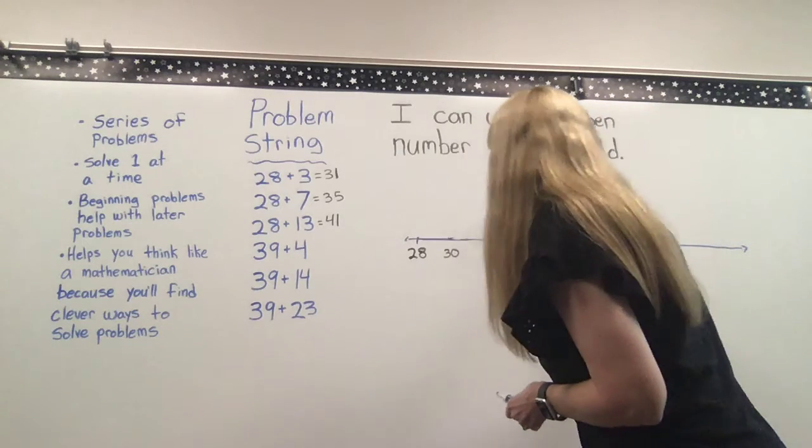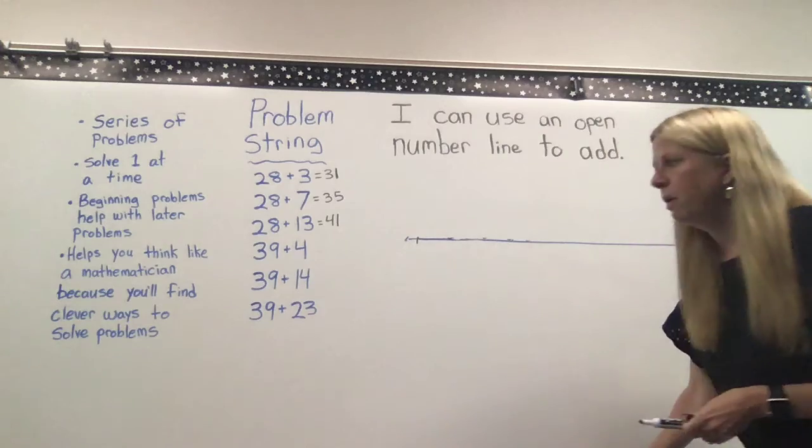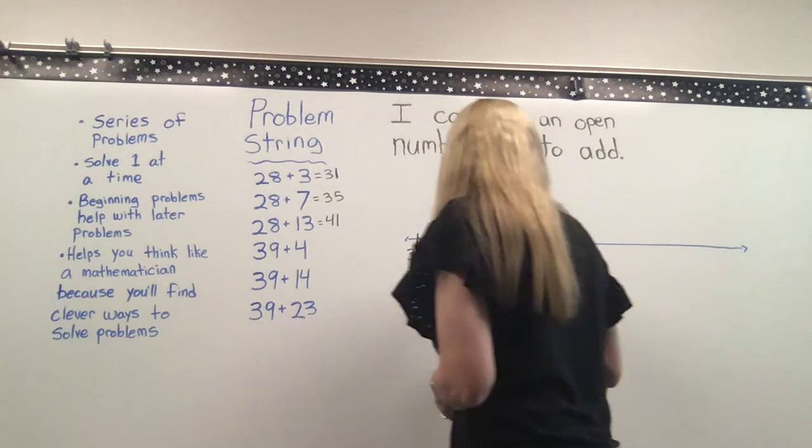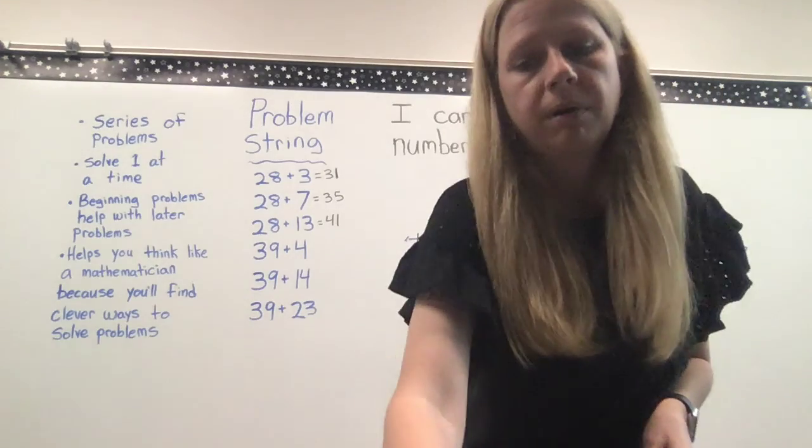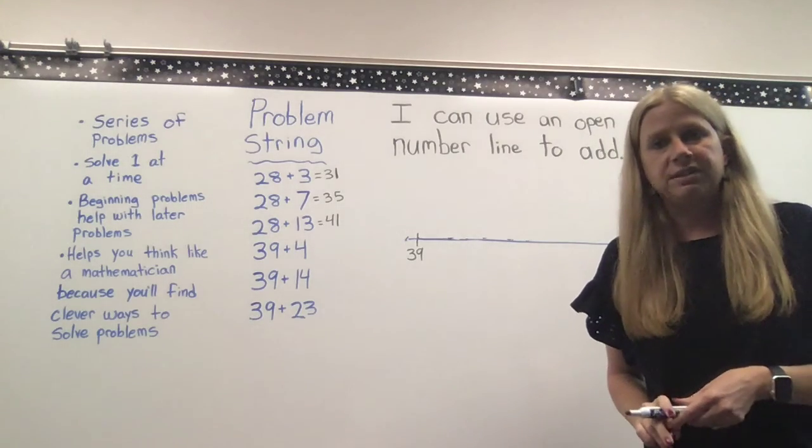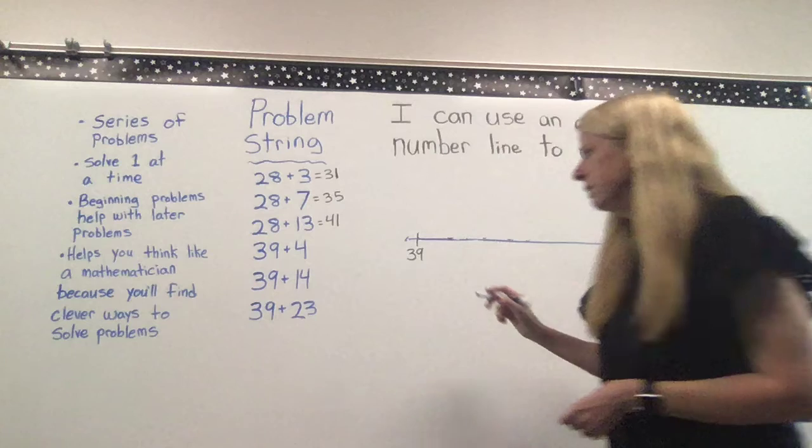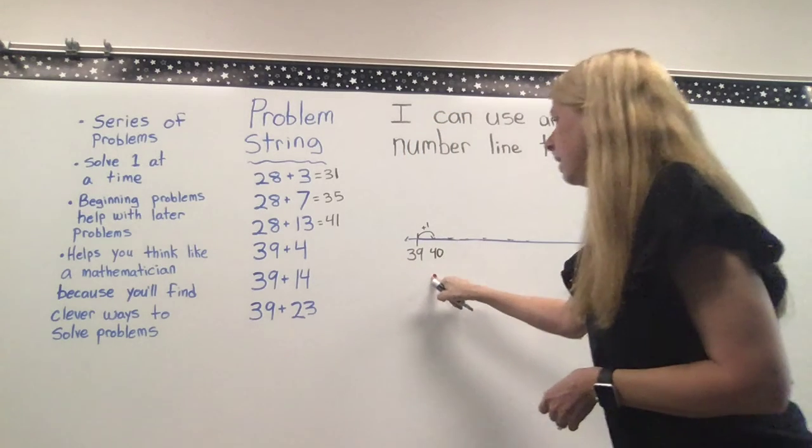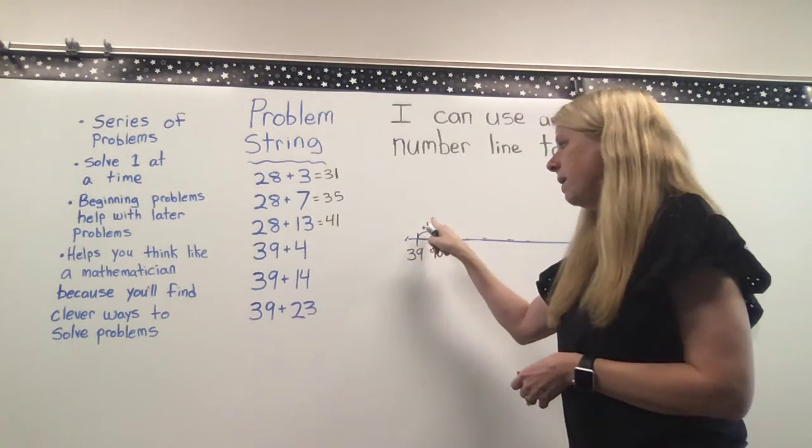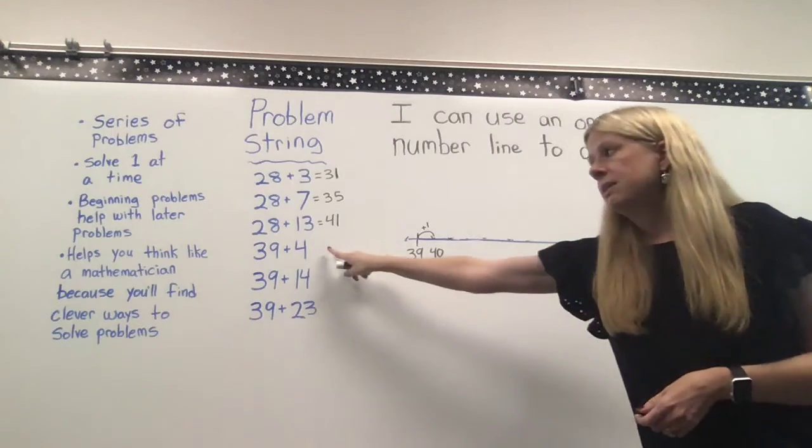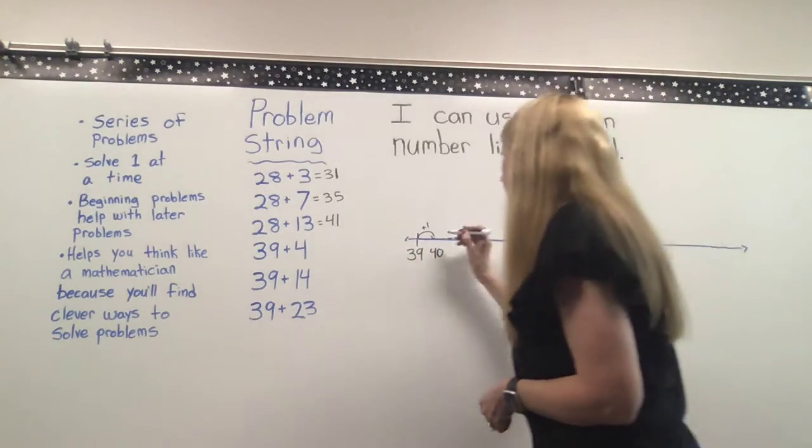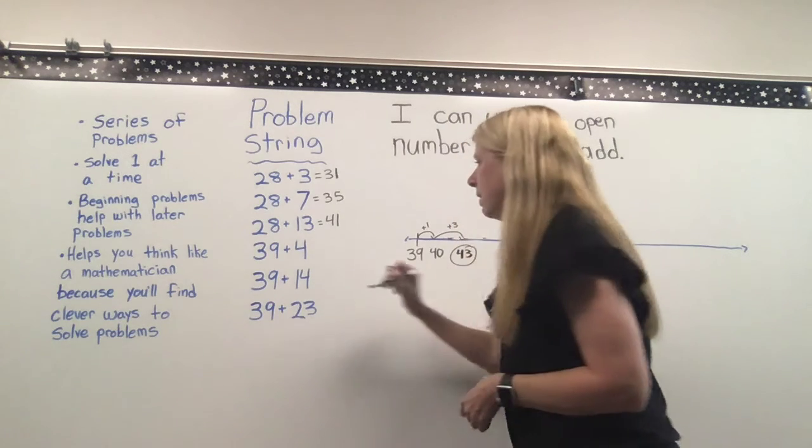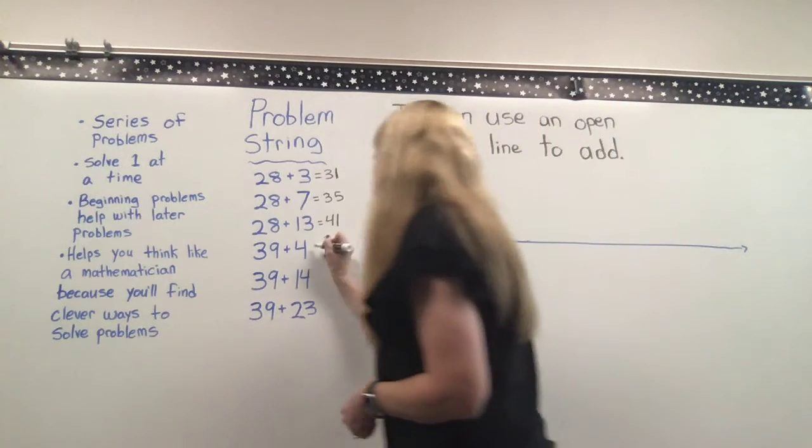All right, moving right along here. Our next problem is 39 plus 4. So I will begin here at 39. And I want to get to a nice neat friendly number. What is the closest number to 39 that is friendly? And the answer is 40. So to get to 40, I just need to jump 1. And I'm at 40. But I know that I really needed to add 4. I've added 1. So how much more do I need to add in order to get to 4? And that would be 3 more. So I jump 3 more. And 40 plus 3 is 43. So 39 plus 4 equals 43.